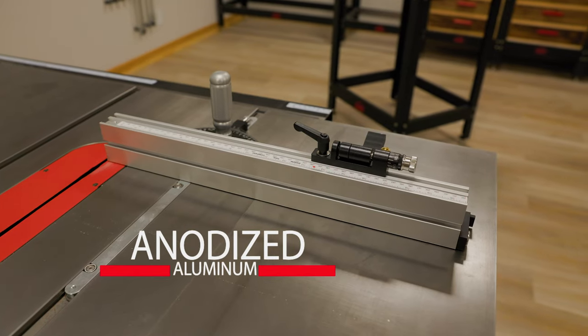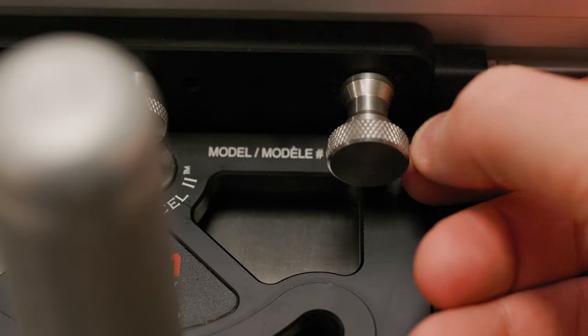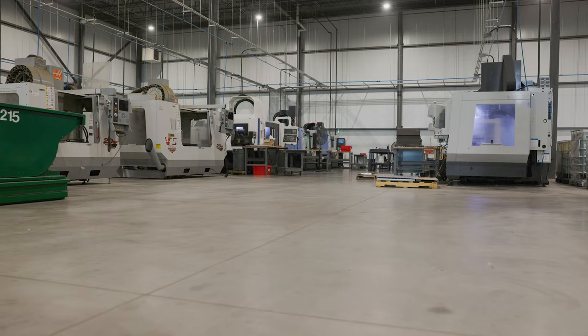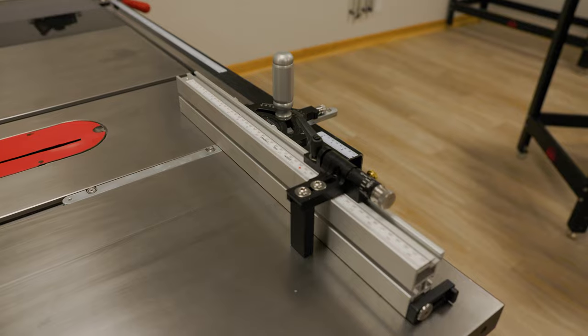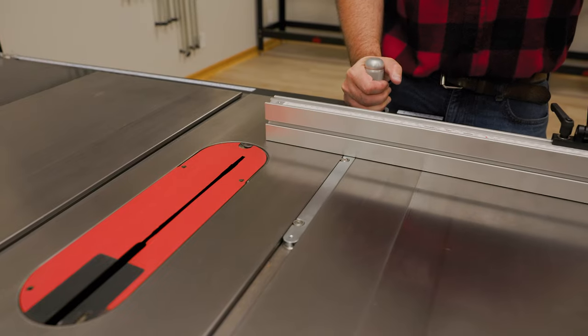From the anodized aluminum fence providing ultimate durability, to the 34 Swiss-turn stainless steel parts all manufactured right here in our facility, the MiterXL2 is built with the highest quality materials to last a lifetime.